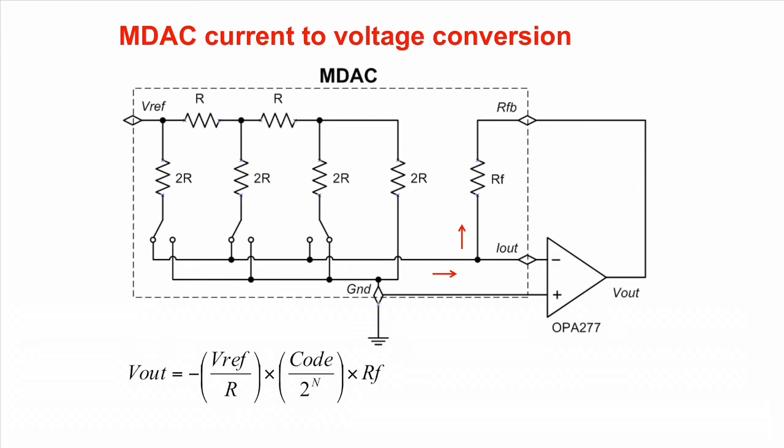The external op-amp must have sufficiently low offset voltage so that the amplifier's offset is not modulated by these impedance changes on the IOUT terminal. Now, if the op-amp has a large offset voltage, this can produce significant linearity errors in the transfer function of the MDAC.